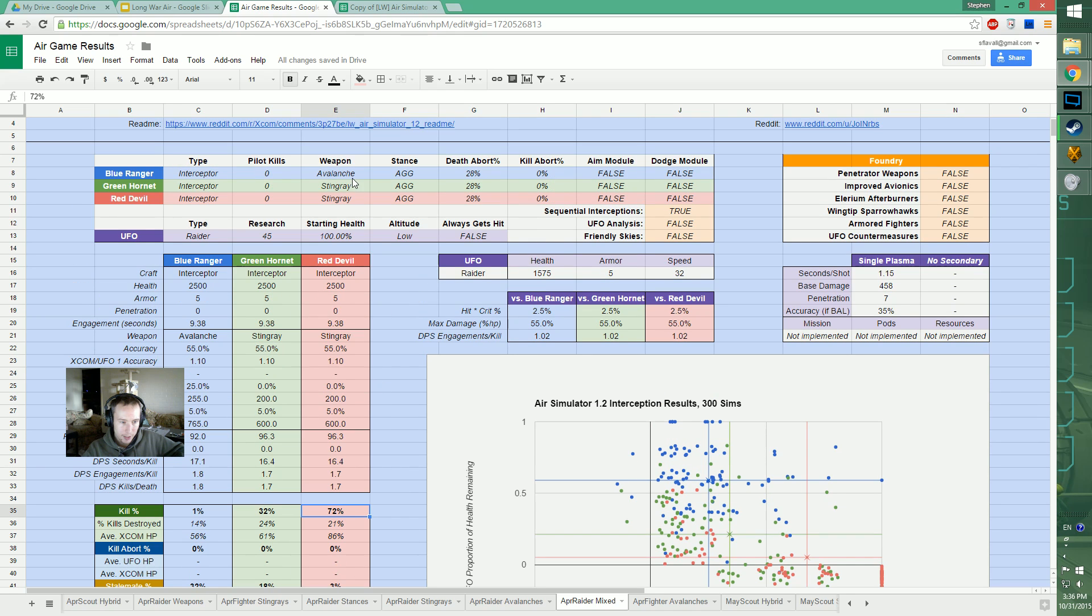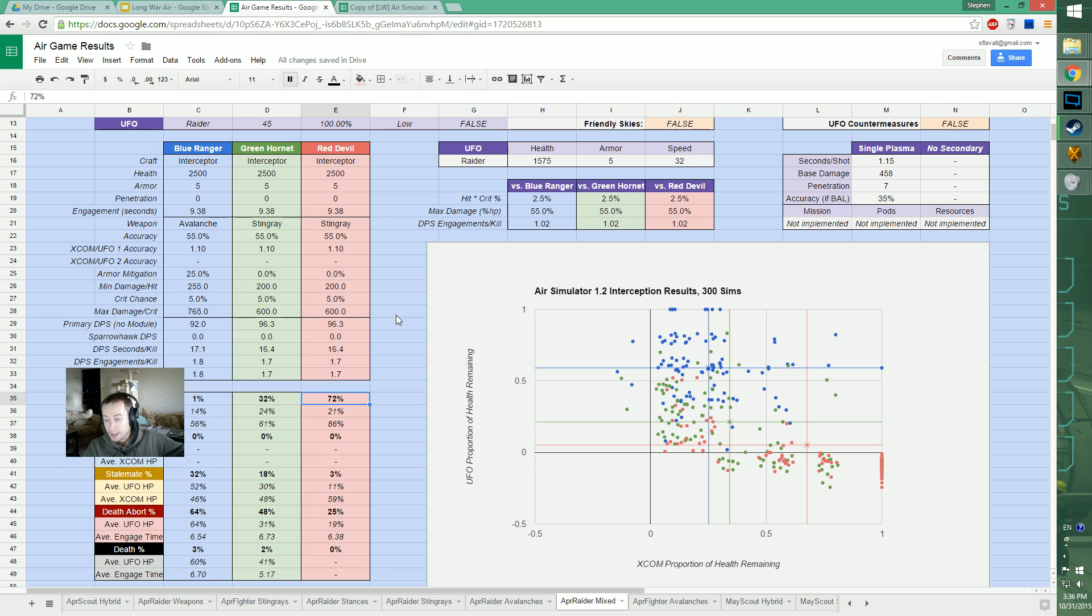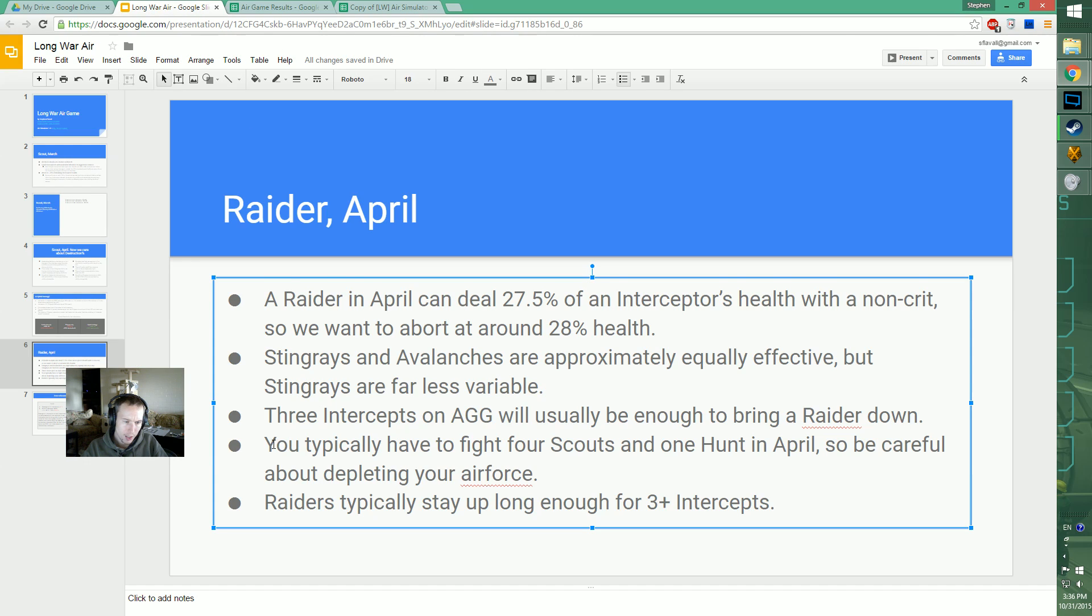Sending an Avalanche first and then Stingrays might be a good idea. If you get a really good Avalanche interception you can know for sure you're bringing the Raider down. If you get a terrible Avalanche interception maybe you just let the Raider go. If you're not willing to commit four or five interceptors and only have three ready, maybe send an Avalanche first. That way if you get a few good hits you can send the Stingrays and get it almost all the time.